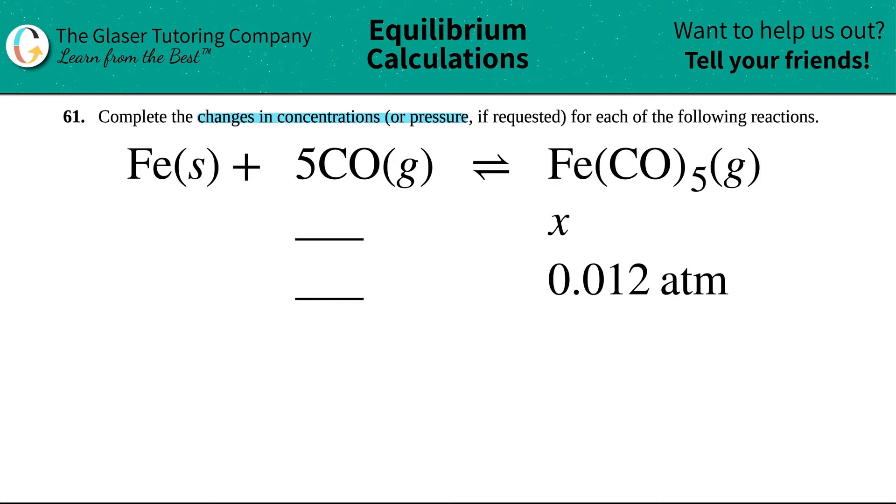So in this case, we have to find the change in the pressure of Fe(s) plus 5CO gas, which comes to equilibrium with Fe(CO)₅ gas. And I say that we have to find the change in pressure because I see that we have an ATM unit here, and always ATM, aka atmospheres, are pressure units.